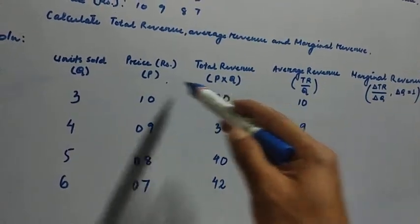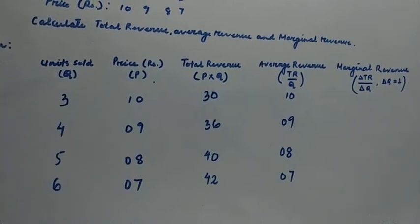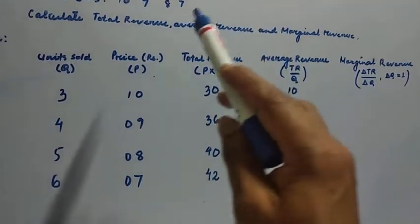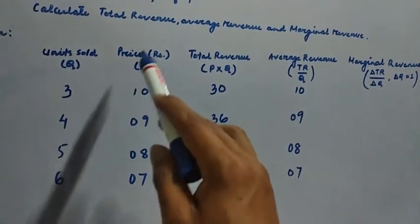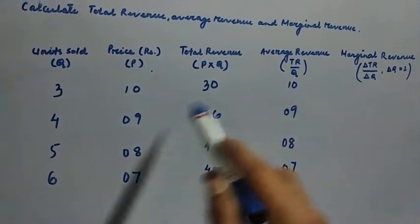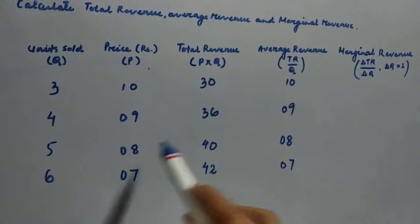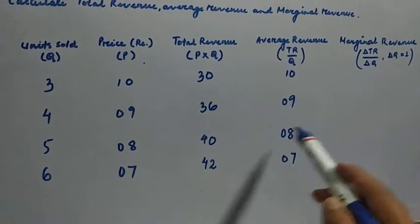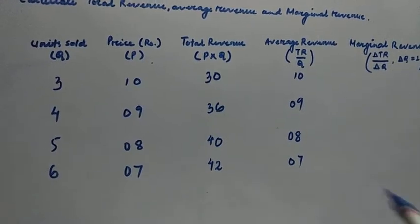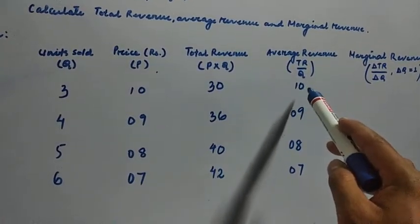Average revenue equals price in each case. Price is 10 and average revenue is also 10; price is 9 and average revenue is 9; price is 8 and average revenue is 8; price is 7 and average revenue is 7. So in this case, price equals average revenue.